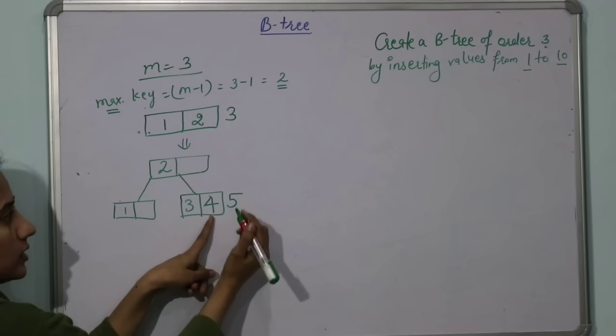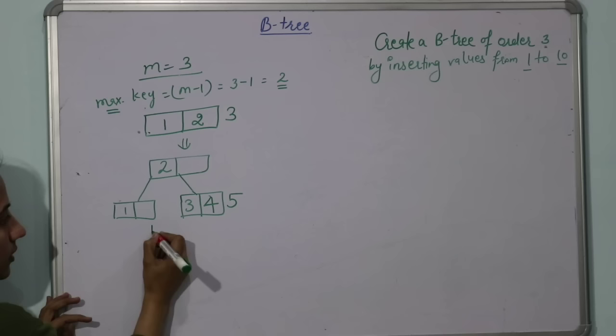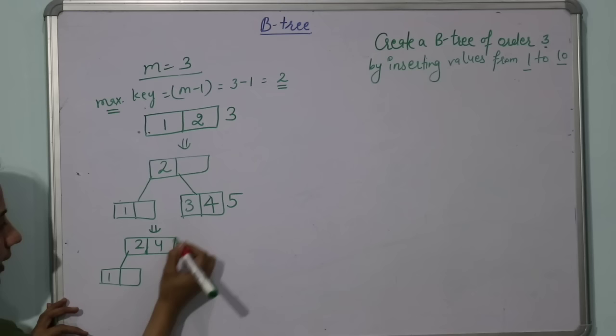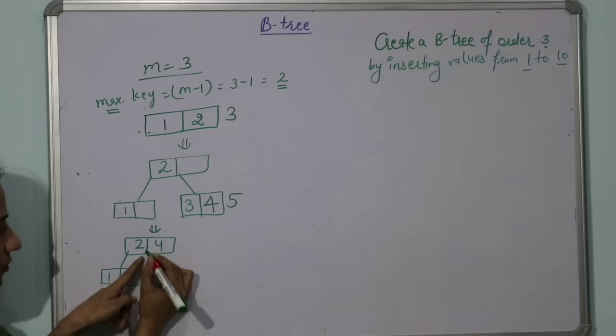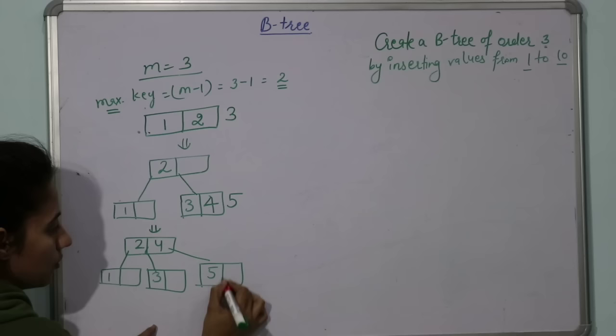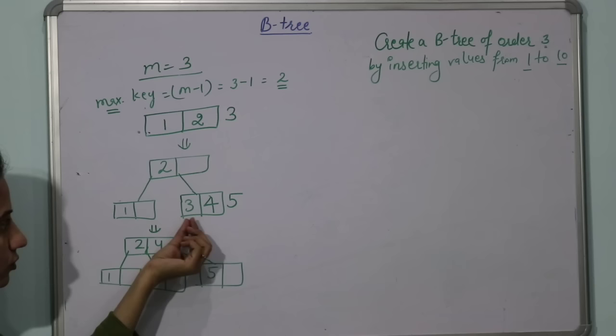Now see, the tree becomes: 2, then 4. Here we have 1, and 3 would come after 2 but to the left of 4. And 5 would go to the right of 4 because 5 is greater than 4.